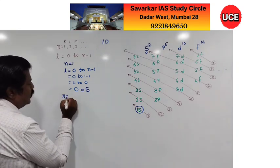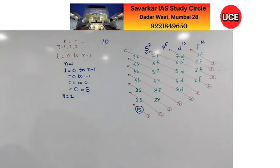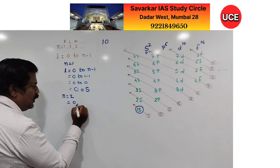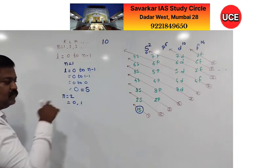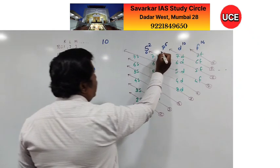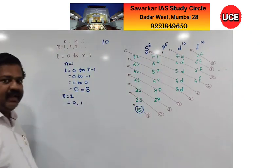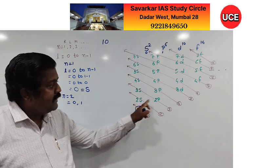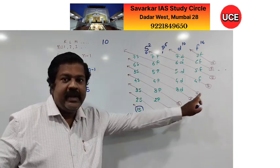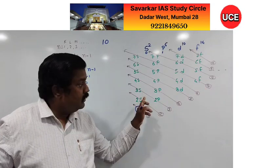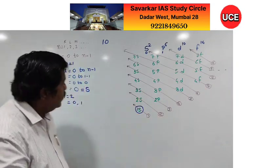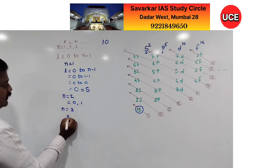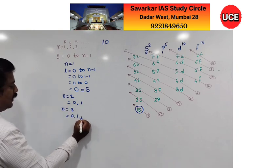For n = 2, l has values 0 and 1 (2−1 = 1). Since l = 1 is denoted by the letter p, we get 2s and 2p. There is no 2f. For n = 3, values are 0, 1, 2 (up to n−1 = 2), so we get 3s, 3p, and 3d.